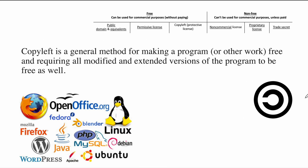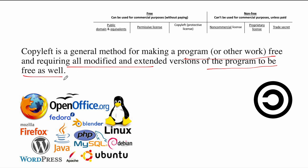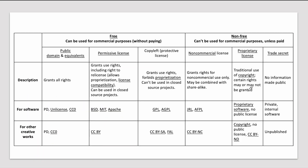Copyleft, as described earlier, also makes the program free and requires all modified or extended versions — meaning if you make your own software utilizing this copyleft — to also be free. It is mandated that it also has to be copyleft. This is a restrictive license, and you can see it is the opposite of copyright — the symbol is like a reversed C — almost a mockery of copyright.